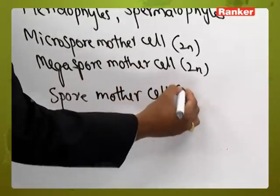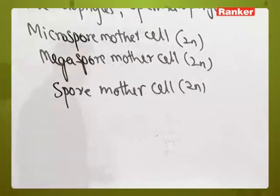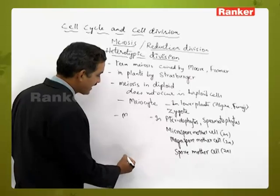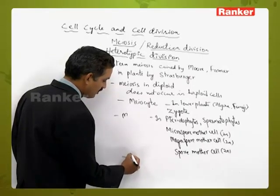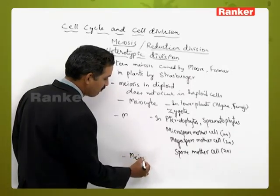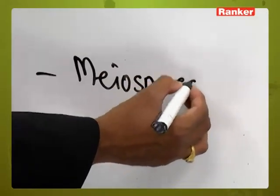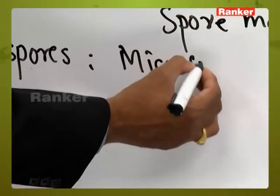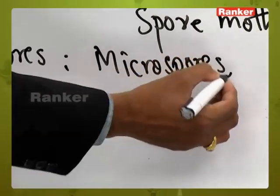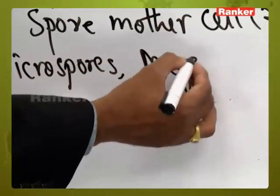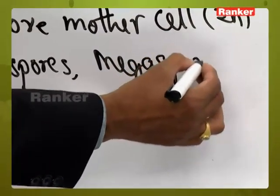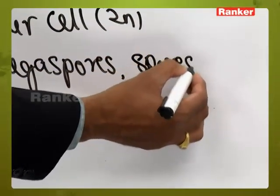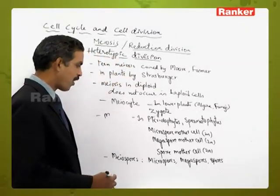The cells formed as a result of meiosis are called meiospores. These include micro spores and mega spores. All of these are haploid structures formed as a result of meiosis, so they are called meiospores.